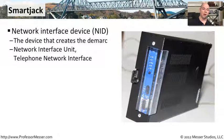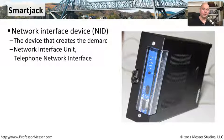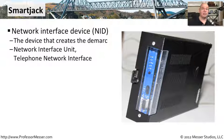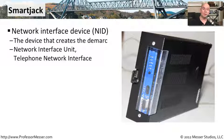Sometimes the box on the wall that the wide area network provider gives you at the DMARC is not just a simple box — it's actually a much more intelligent device. We refer to these as smart jacks. They're more than just a jack. They're an intelligent device that can tell us a lot about that connection. You may hear these referred to as a network interface device, a network interface unit, or even a telephone network interface, but they're all the same thing — the smart jack connection that provides your demarcation point.